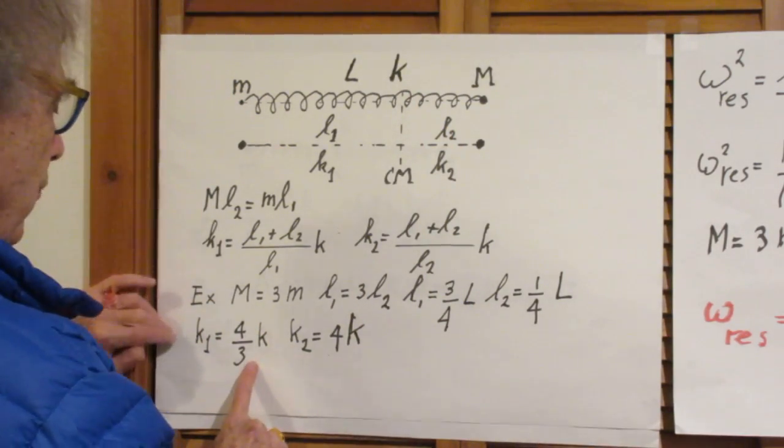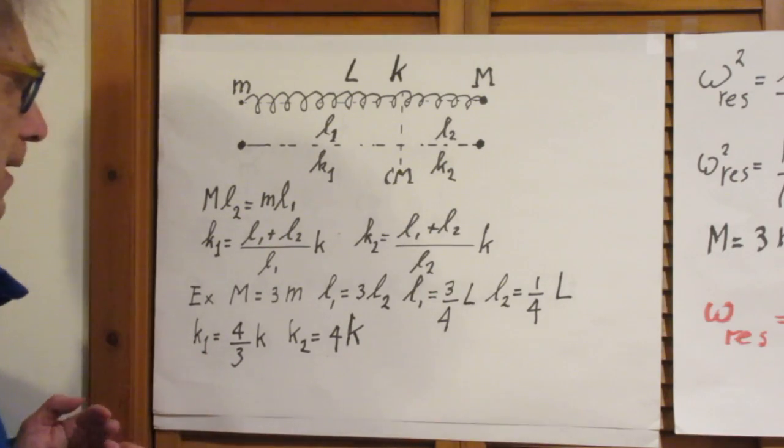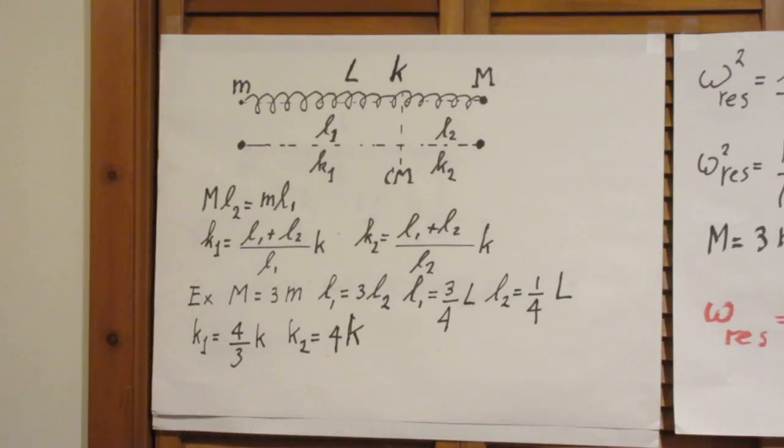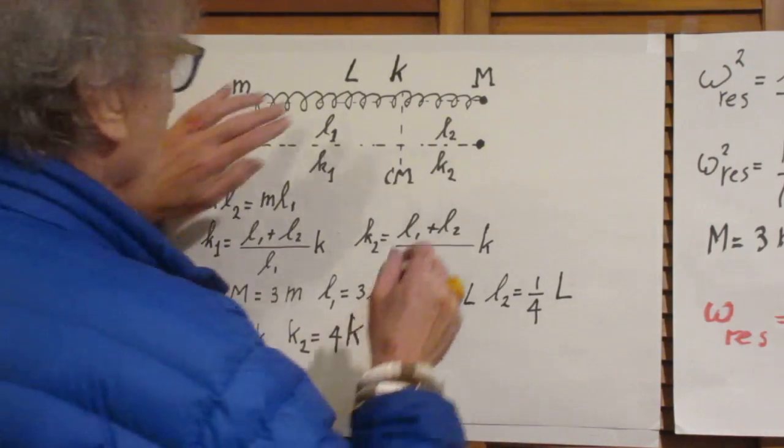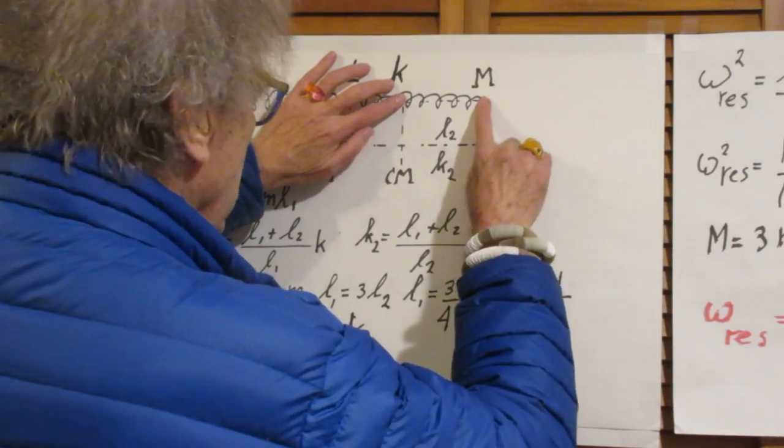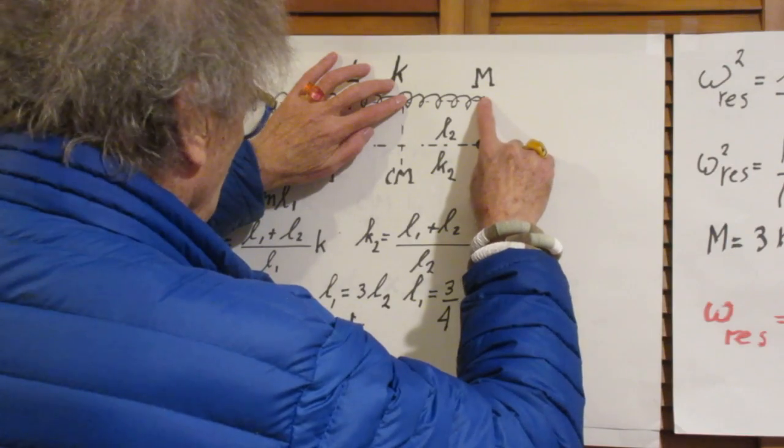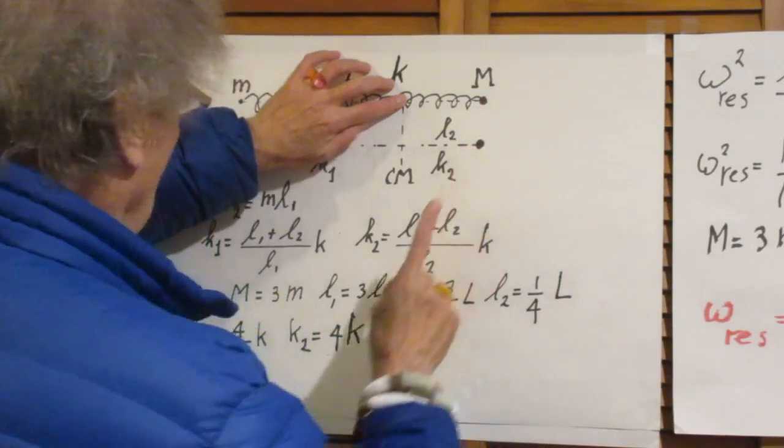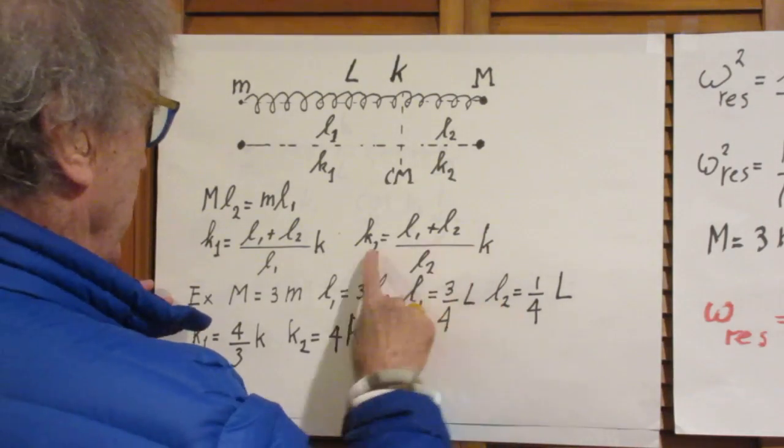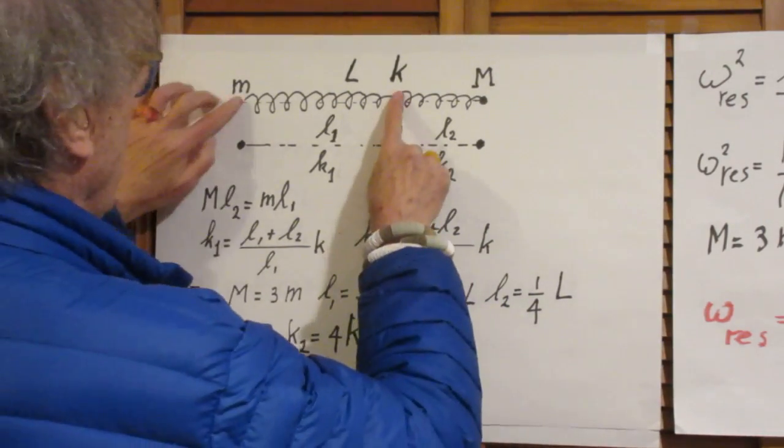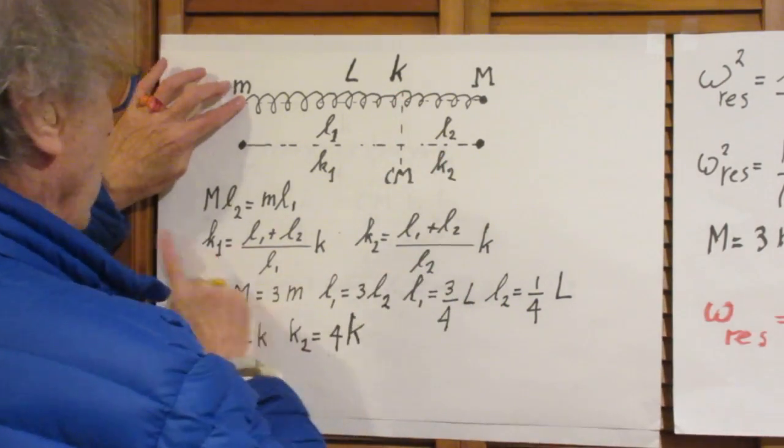But if L2 is only 1 quarter of the total length, its spring constant must be 4 times this value, 4K. And the spring constant of K1 would then be 4 third K. So now we can treat the system as one spring here with spring constant K2 and one spring here with spring constant K1.